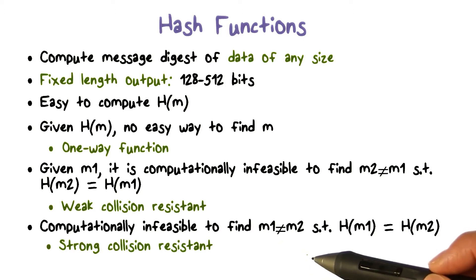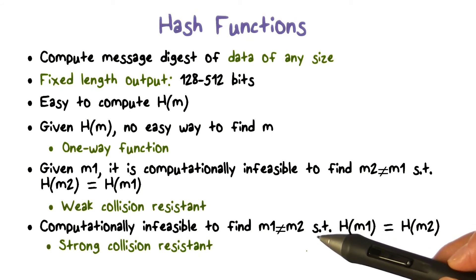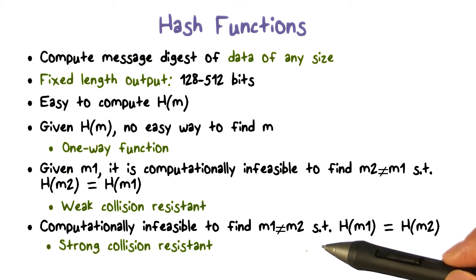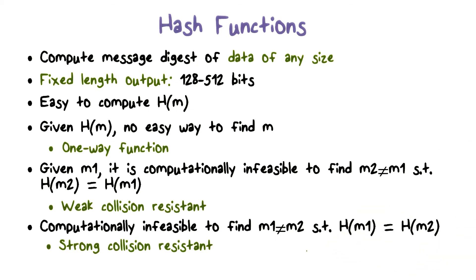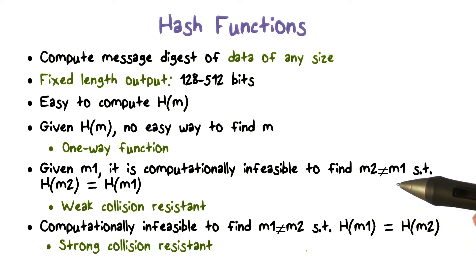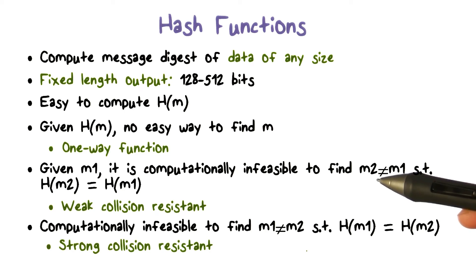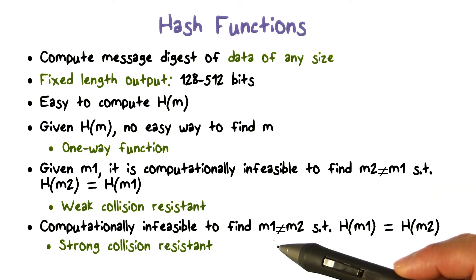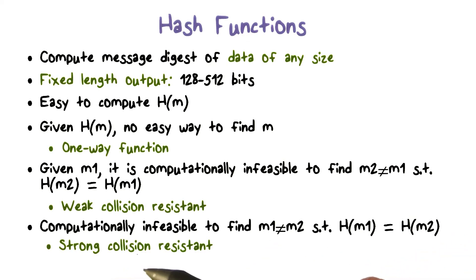For example, suppose Bob writes an IOU message and sends it to Alice to sign. Alice hashes the message first and then signs the hash using her private key. If Bob can find two different messages with the same hash value — one requiring Alice to pay a small amount and the other a very large amount — and sends the small-amount message for Alice to sign, then after receiving her signature, Bob can claim Alice owes a larger amount. Because the two messages have the same hash, the signatures are identical. It should be obvious that if a hash function satisfies the strong collision resistant property, it automatically satisfies the weak collision resistant property.